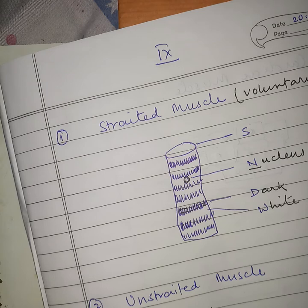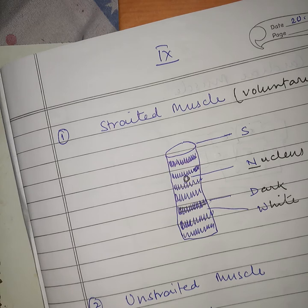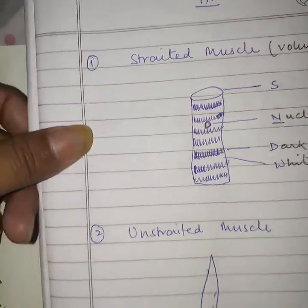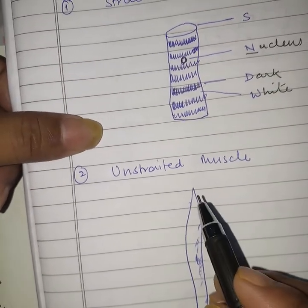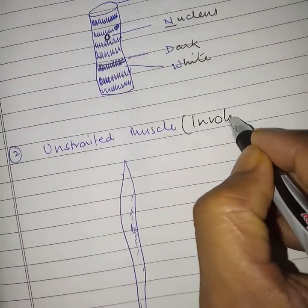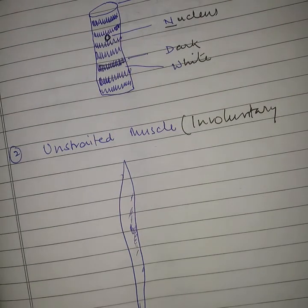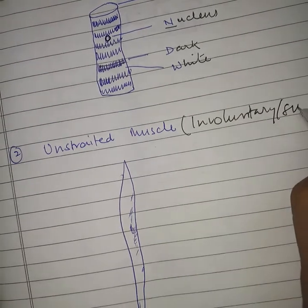Striated muscles are also found in the face, neck, and jaw regions — that is why we can move our hands, legs, lower jaws, and neck. As an activity: wherever you can move a body part according to your wish, striated or voluntary muscles are present in that location.